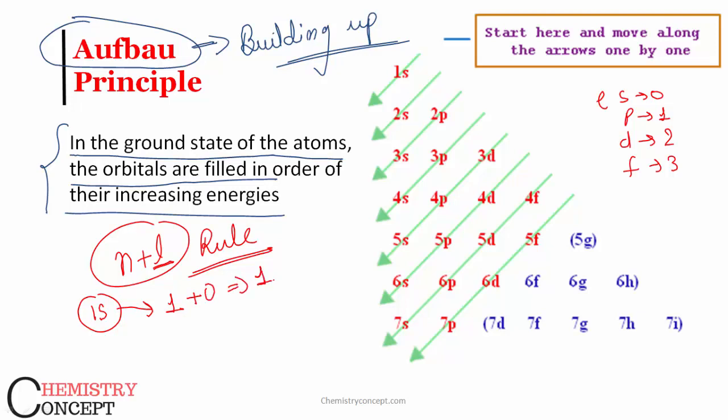So for 1s orbital, n is one and l is zero. So n plus l value is one. When we talk about 2s orbital, it would be again two plus zero, that is two. So obviously 1s orbital is of lower energy as compared to 2s orbital. First electrons will go into 1s orbitals, then only electrons will be transferred into 2s orbital.